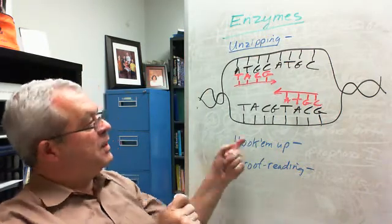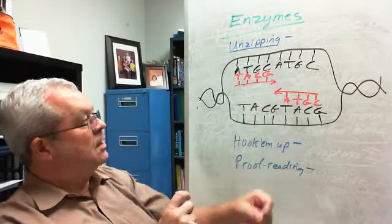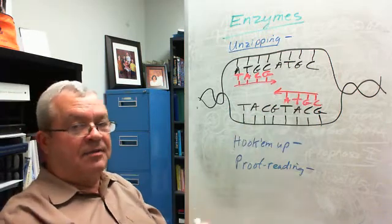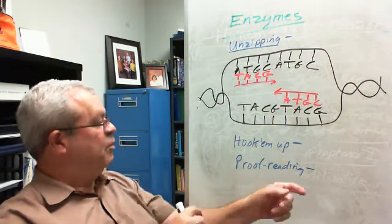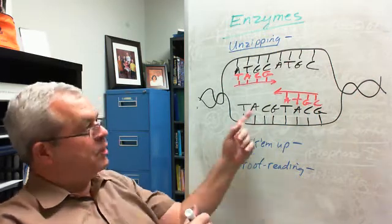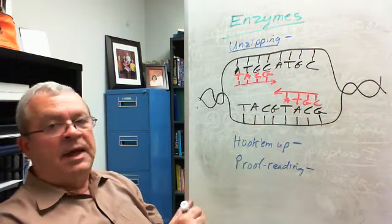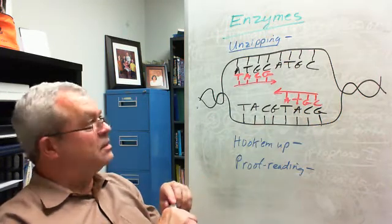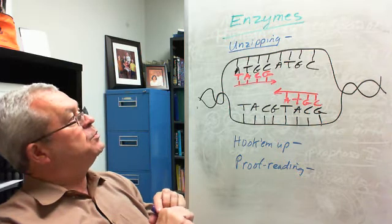Then we've got hook-em-up enzymes that are hooking up these new nucleotides to each side of the original strand. And then we've got proofreading enzymes that go back over and check it all out, make sure there are no boo-boos, no mistakes made in the replication process, in the hook-em-up process in particular.